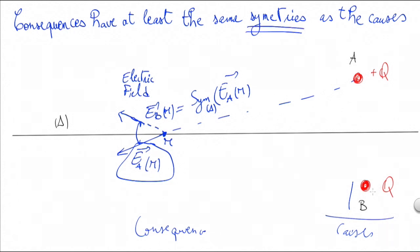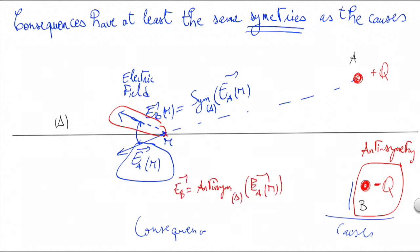And this principle can even go beyond normal symmetry. It can also cover anti-symmetry. So if the ball B is negatively charged, so the opposite of charge A, the field created in n by B would be the anti-symmetric by delta of Ea. So it would be now the opposite of the previous vector.